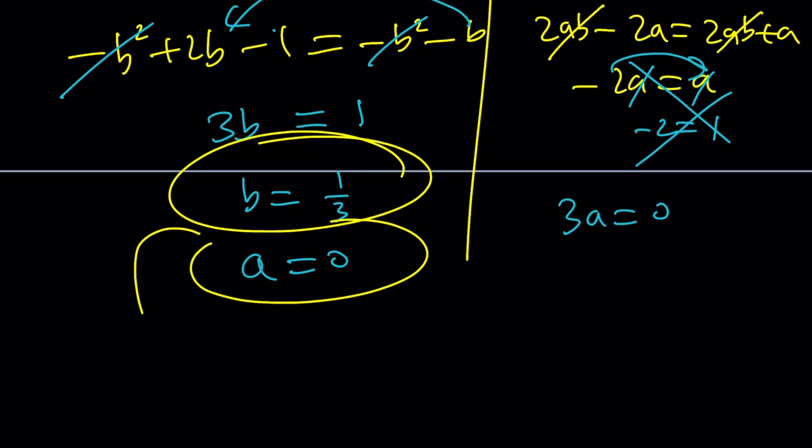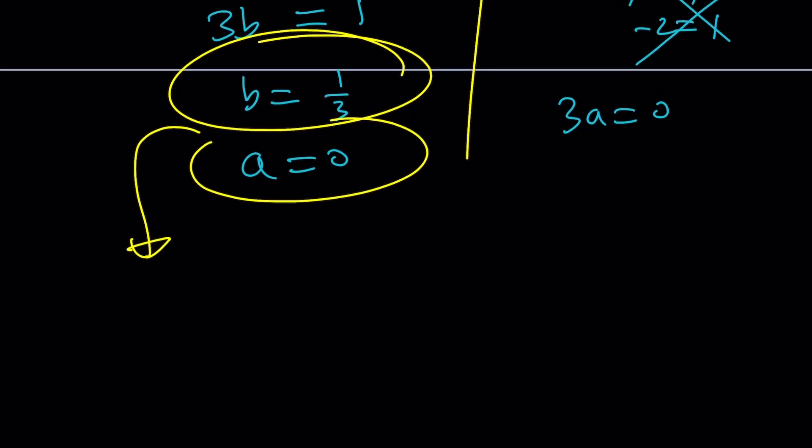What is that supposed to mean? It means now we can write our complex number. Remember the name of this channel. How do you write a complex number? a plus bi. So since a is 0, this is going to be 0 plus 1 over 3 multiplied by i. But you can ignore the 0 and just write z as 1 over 3 multiplied by i. That will be the only solution to this equation.